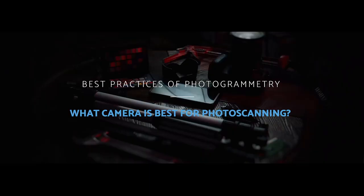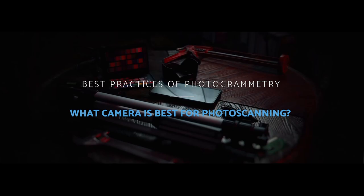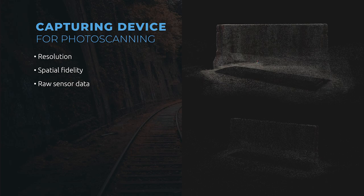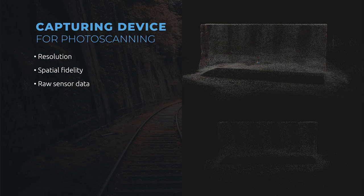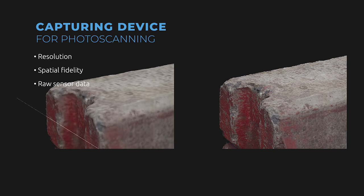One of the most common questions about photo scanning is: what camera is the best? Can I use my smartphone or should I get a DSLR? In short, all capturing devices have three main properties that influence the photo scan quality, and that is resolution, spatial fidelity, and access to the raw sensor data. It all boils down to these three properties, so in this tutorial we'll have a look at them.